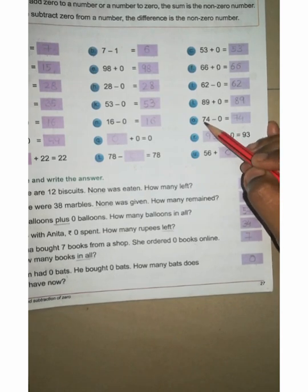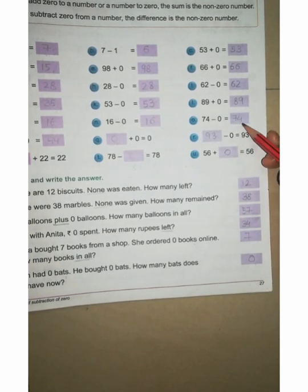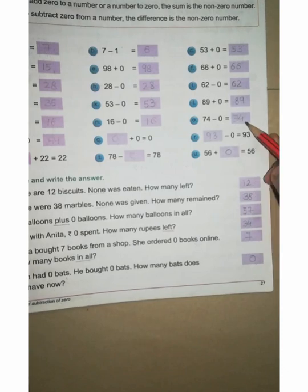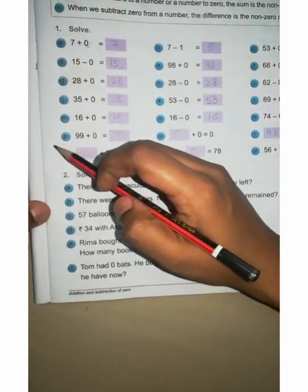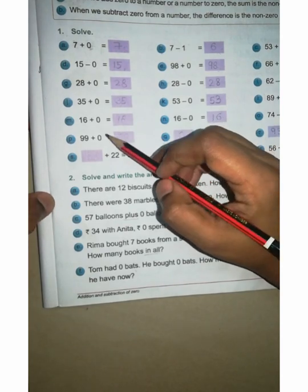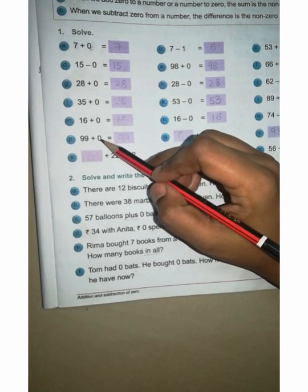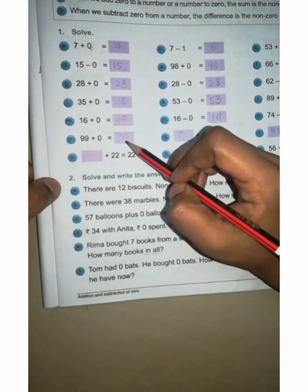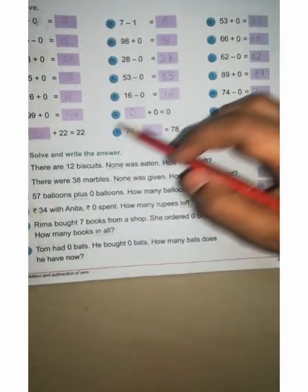O: 74 minus 0 equal to dash. Same 74. Come here, P: 99 plus 0 equal to dash. Plus zero, zero. Same here, no value, as it is. No value, as it is, you can write 99.